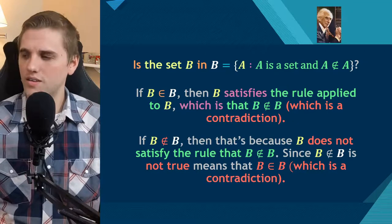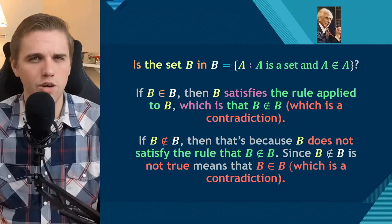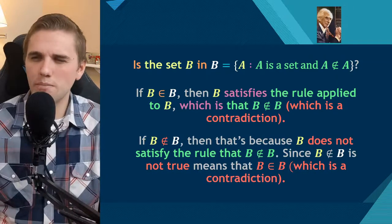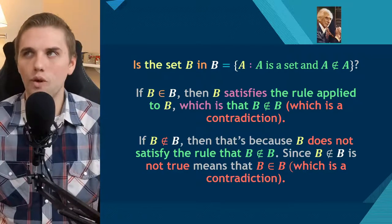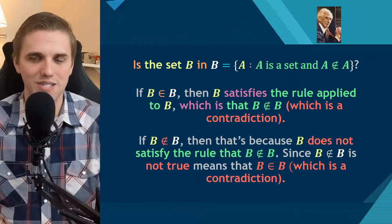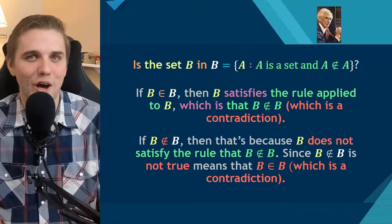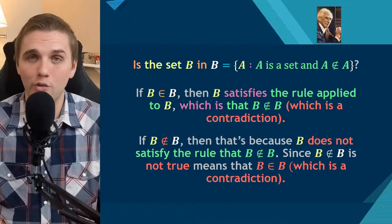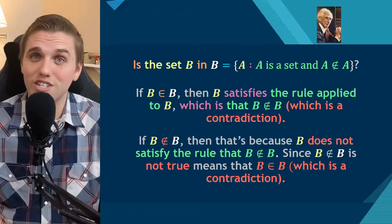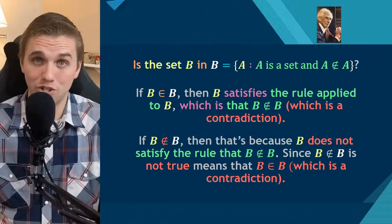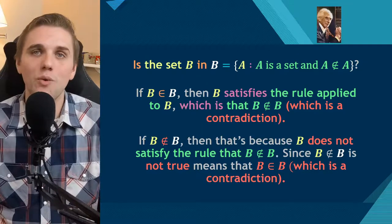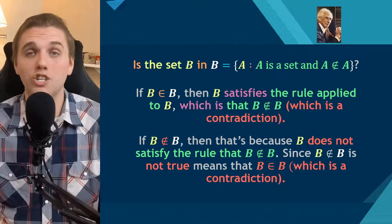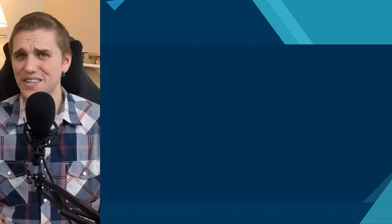That's a contradiction as well. So what assumption did we make in this paradox? We came to a contradiction, but what assumption led us here? Usually when we run into contradictions we find the assumption that caused it. The problem here is that we didn't really make an assumption other than Frege's Basic Law 5, which is just Unrestricted Comprehension. This means that Unrestricted Comprehension is a problematic approach to mathematics.